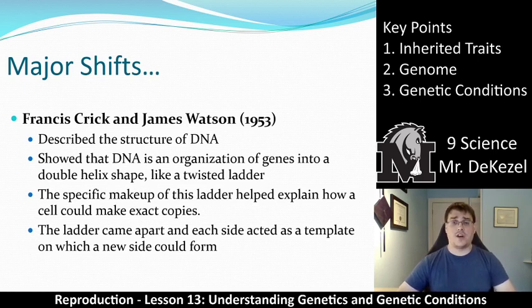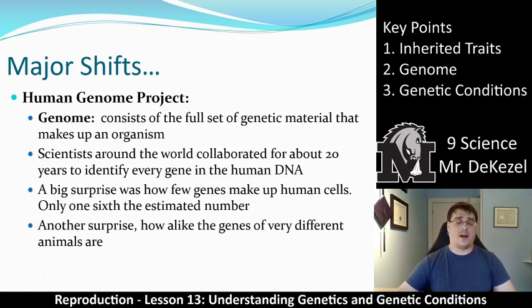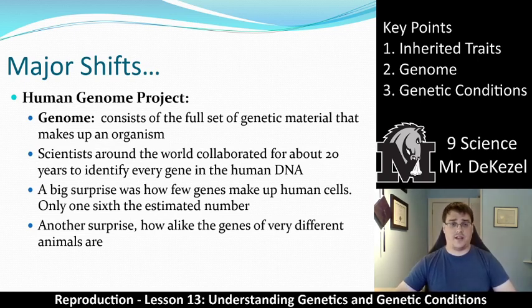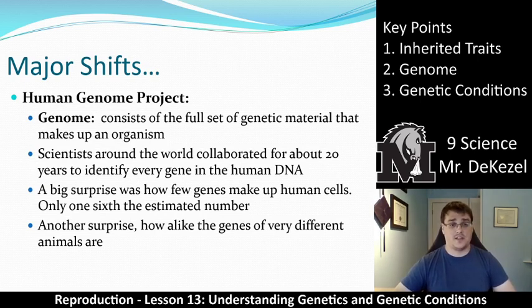The traits were first described by Gregor Mendel long before this. More recently, we completed what's called the Human Genome Project — we mapped out the entire list of bases for humans. We know that variations in these bases cause different eye colors, hair colors, heights, and similar traits. A genome is the full set of genetic material that makes up an organism; they are very similar between individuals but differ in specific places that determine our traits.